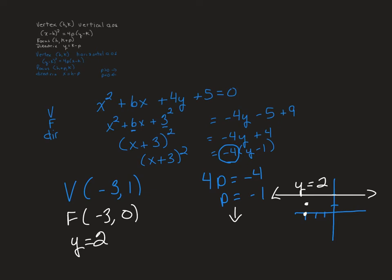Now I just need to sketch the graph. You could do a t-chart but I'm not going to look extremely closely. It's going to look something like this — opening downward. I'm expecting to see the vertex, the focus, the directrix, and whether this opens up or down.